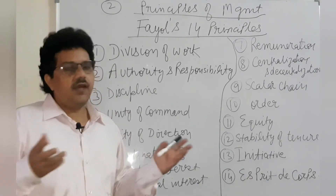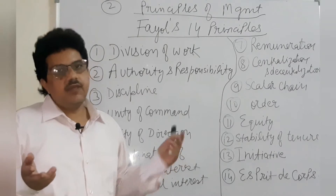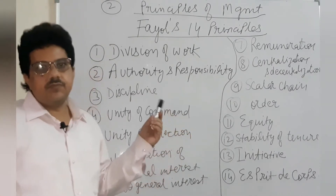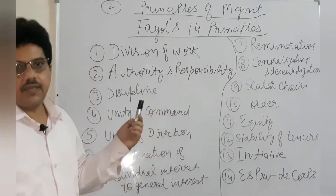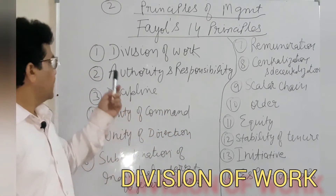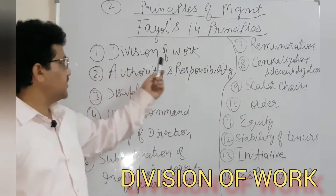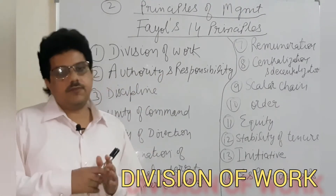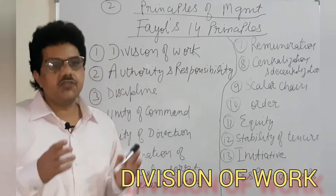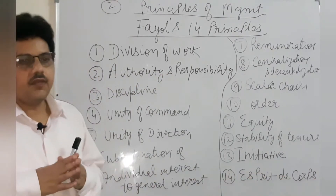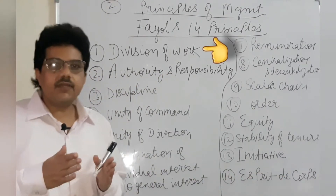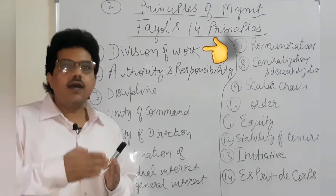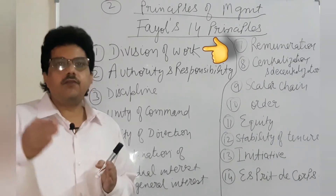So without wasting time, let's start the principles of management by Henry Fayol. Number one is Division of Work. Division of work ka matlab hai kaam ka batwara — the division of work.